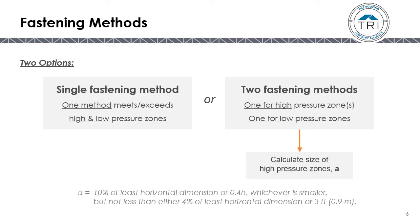When looking at the whole roof and the roof zones, there are two options. The first option is the single-fastening method, where you use one fastening method for the entire roof that meets or exceeds both the high and low-pressure zones. The other method is the two-fastening method, where you use one method of fastening for the high-pressure zones and another for the low-pressure zones. To do this, you need to calculate the size of the high-pressure zone using the formula for A.